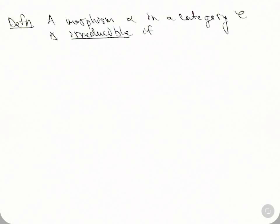A morphism alpha in a category C is irreducible if, whenever we can write it as the composition of two things alpha equals beta composed with gamma, then this implies that beta is an isomorphism or gamma is an isomorphism.